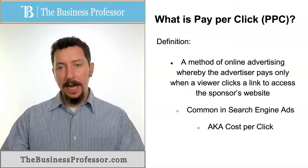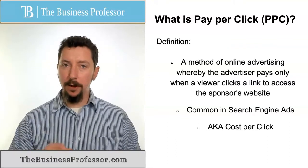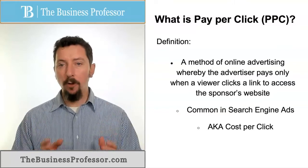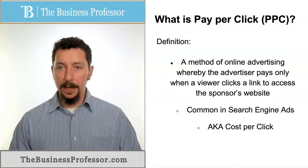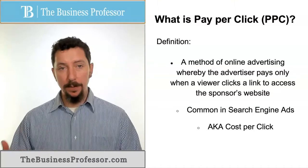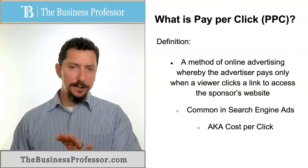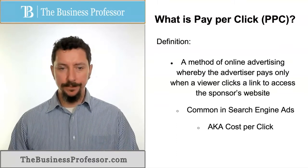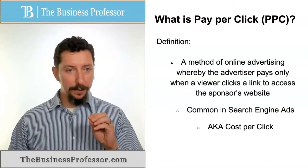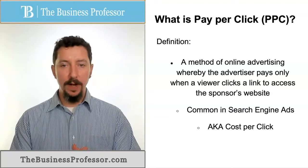In other words, if we put an ad out there and somebody sees it but they don't click on it to learn more, we don't have to pay. That's the whole idea behind pay-per-click. It's common in search engine ads — ads that pop up when somebody does an internet search. It's also known as cost-per-click, and this is a very efficient way to get the most value for our money in terms of web advertising.